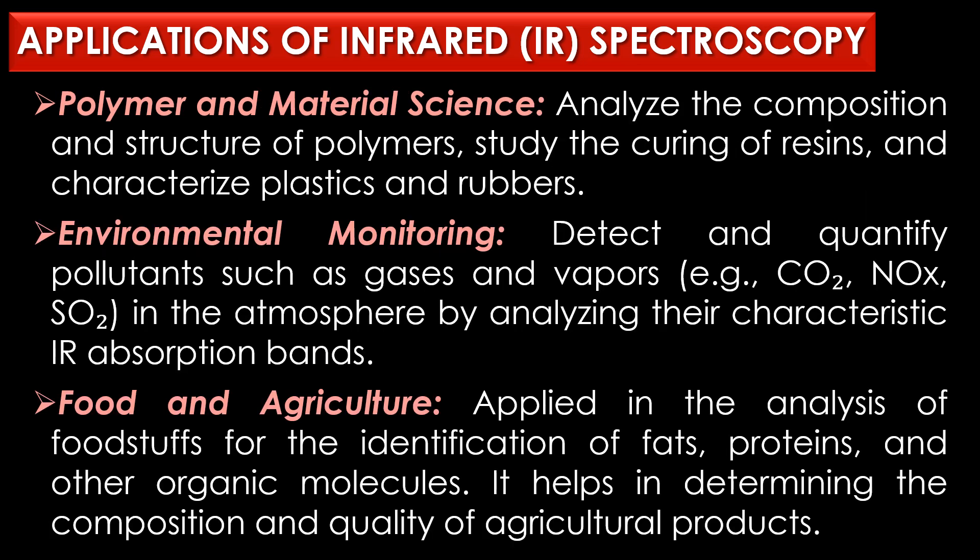In polymer and material science, IR spectroscopy is used to analyze the composition and structure of polymers, study the curing of resins, and characterize plastics and rubbers. In environmental monitoring, IR spectroscopy is used to detect and quantify pollutants such as gases and vapors — for example, carbon dioxide, nitrous oxide, and sulfur dioxide in the atmosphere — by analyzing characteristic IR absorption bands. In food and agriculture, IR spectroscopy is applied in the analysis of food substances for identification of fats, proteins, and other organic molecules.